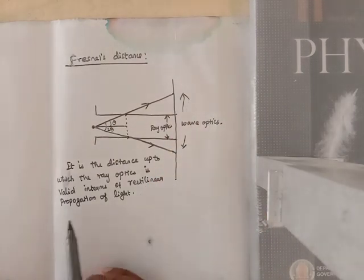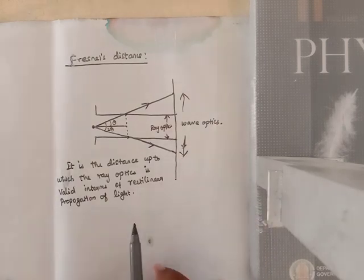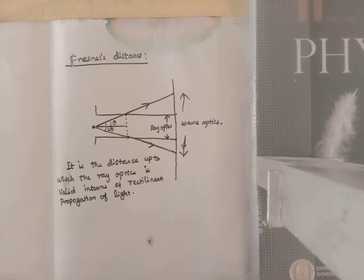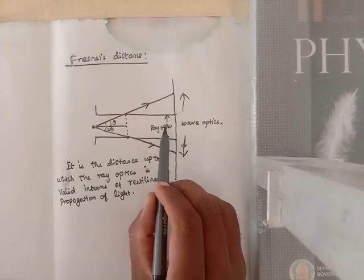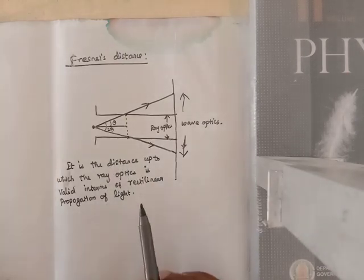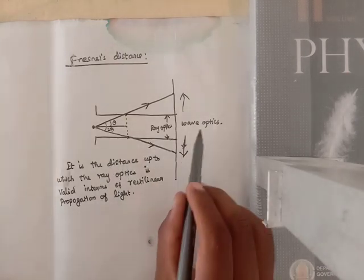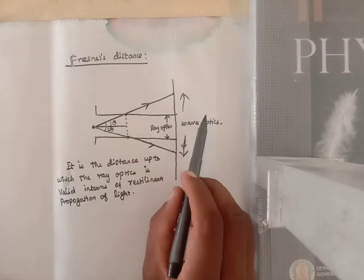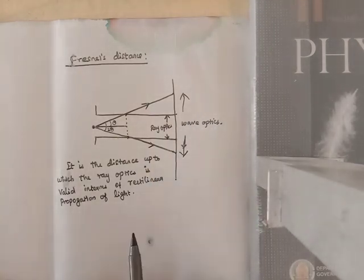So from the concept, what is the meaning of frontal distance? The frontal distance is the distance up to which ray optics is obeyed, and beyond which ray optics is not obeyed but wave optics becomes significant. That is the frontal distance.